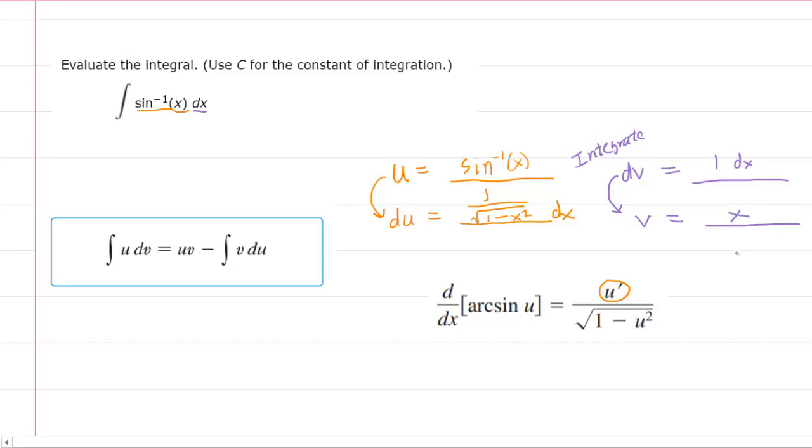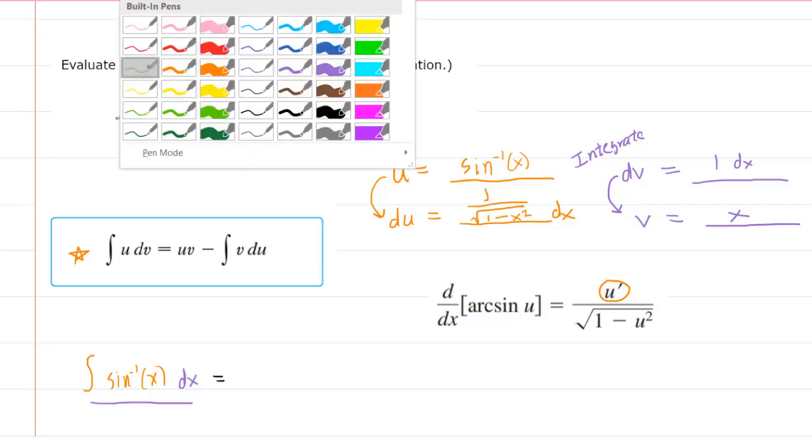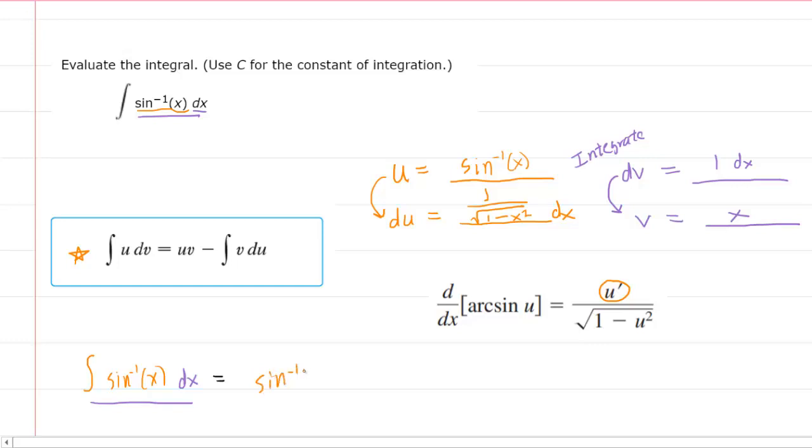So now we have the four pieces of our puzzle. We can now start plugging into the integration by parts formula, which again is given over here. So we would have the integral of our u, which we said was the inverse sine of x, times our dv, which we said was just dx. Notice this expression is the same as the original problem. And then this is going to equal the u, which we said again was the inverse sine of x, multiplied by v.